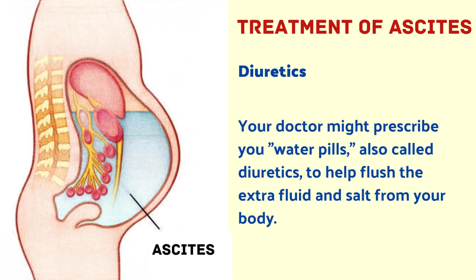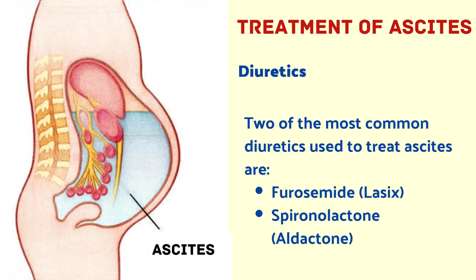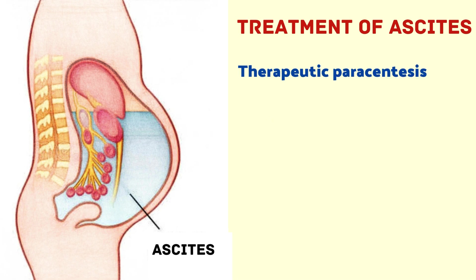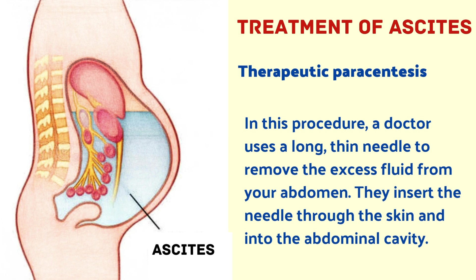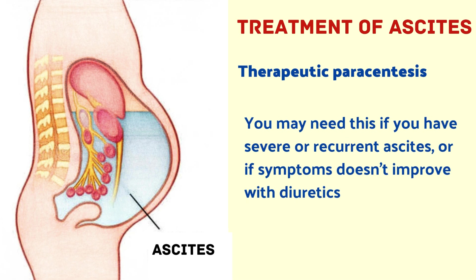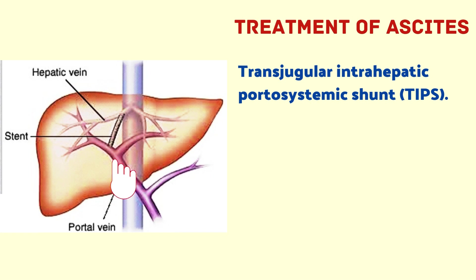Now let us discuss treatment. Diuretics: your doctor might prescribe water pills, also called diuretics, to help flush extra fluid and salt from your body. The two most common diuretics used to treat ascites are furosemide (Lasix) and spironolactone (Aldactone). The next treatment option is therapeutic paracentesis — a doctor uses a long thin needle to remove excess fluid from your abdomen by inserting it through the skin into the abdominal cavity. You may need this if you have severe or recurrent ascites, or if symptoms don't improve with diuretics.